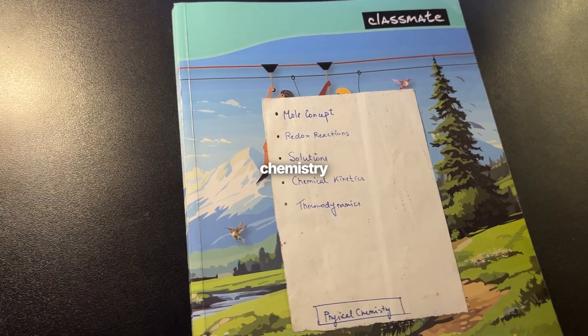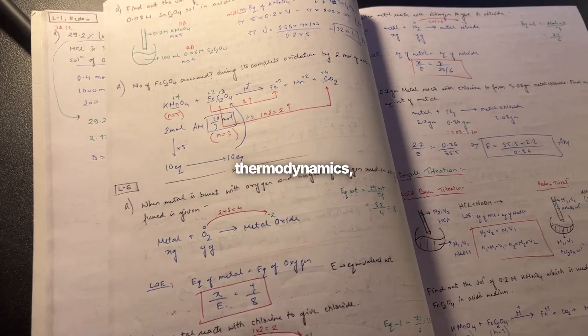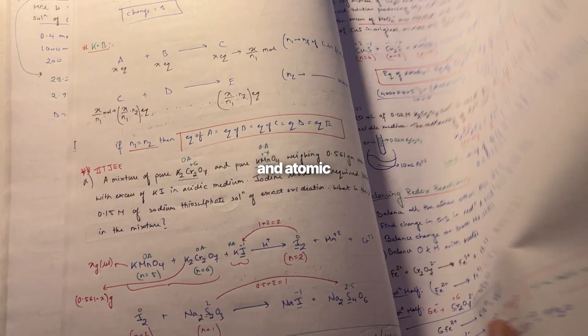In chemistry, half of physical chemistry is done, just the other half is remaining that is thermodynamics, equilibrium, electrochemistry and atomic structure.